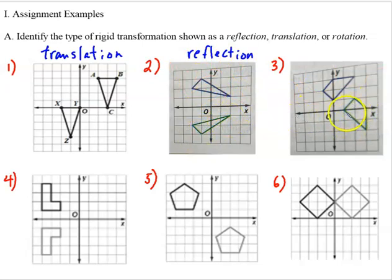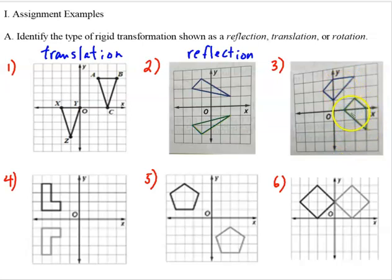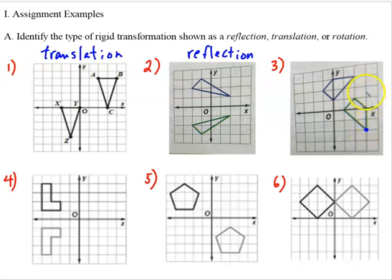Number three is an example of a rotation. You can't flip one over and get the other one — there is no line of reflection. This isn't just sliding the green shape to a new location because the points don't correspond. If it were a true translation, this point should still be in that same basic location on the image. But you can tell this point has been turned. So when the original object has been turned in any way, that's what we call a rotation.